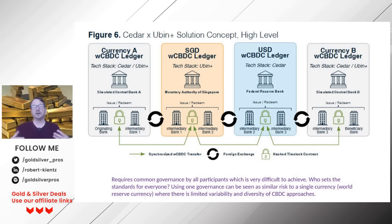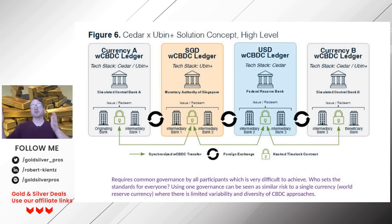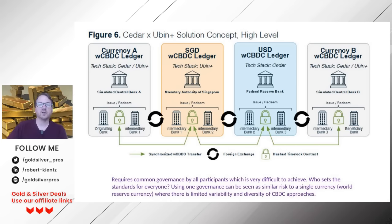Looking at their high-level concept, you can see currency A with their CBDC ledger using a combined tech stack of Cedar and Ubin, Singapore using Ubin, USD using Cedar, and then currency B. It's talking about how to use this technology to facilitate multiple transactions using two different existing technology stacks — can we unite them and trade currencies across the world? The problem is it requires common governance, which is an issue. I don't think this is going to be the ultimate solution, but it's part and parcel of what's ultimately going to be the solution for central bank digital currencies and cross-border payments.